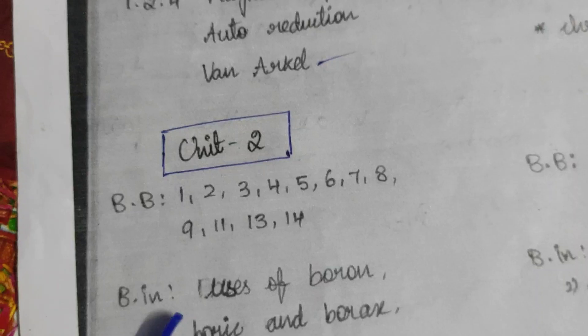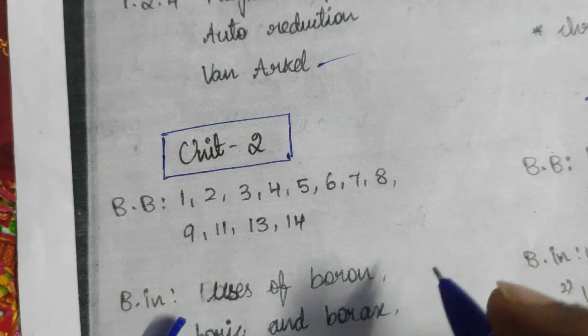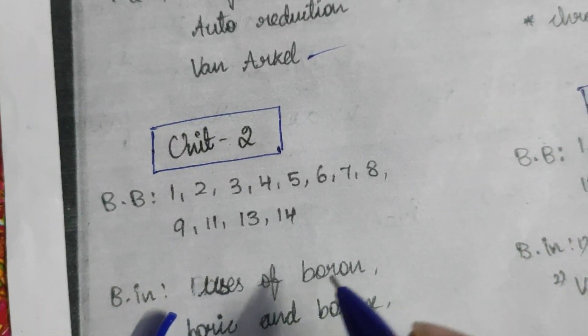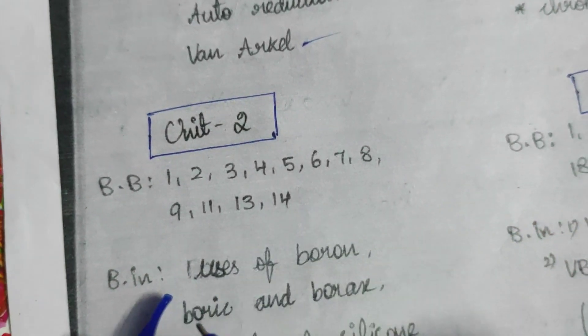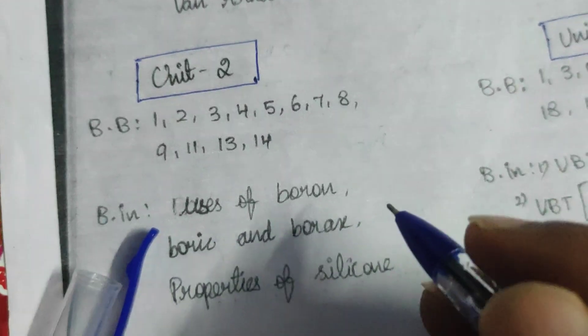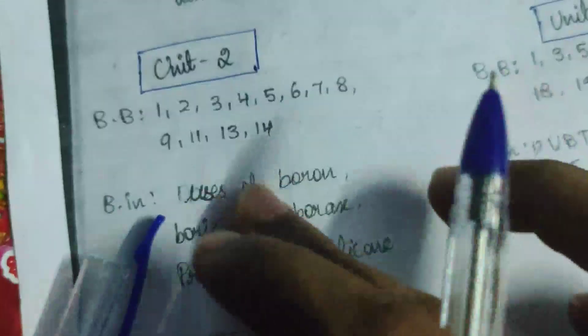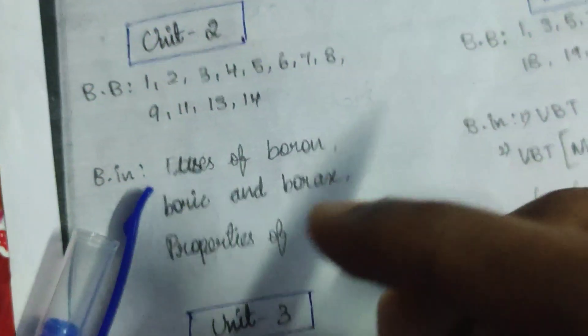Book back: 1, 2, 3, 4, 5, 6, 7, 8, 9, 11, 13, 14. Booking: use of Borane, Borane, Properties of Silicon. This is Unit 2.